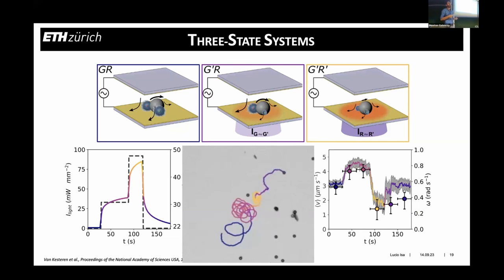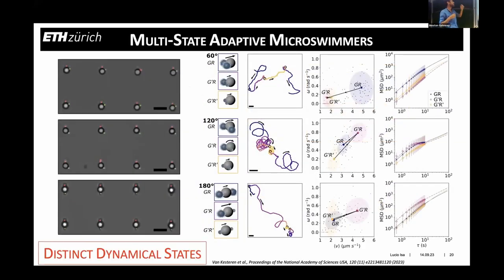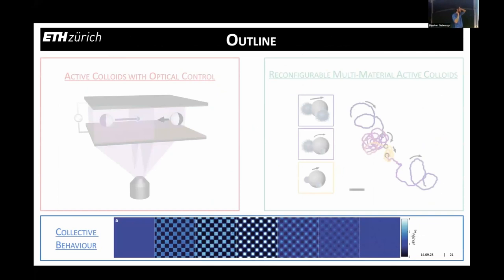This is just scratching the surface. By combining materials and deciding how we position them relative to the central colloid particle, we can produce a broad range of swimmers with distinct internal states and distinct dynamical states, programmed during synthesis. Depending for instance on the internal angle that the two microgels make with respect to the central polystyrene particle, we achieve different ways of exploring space in the different states.